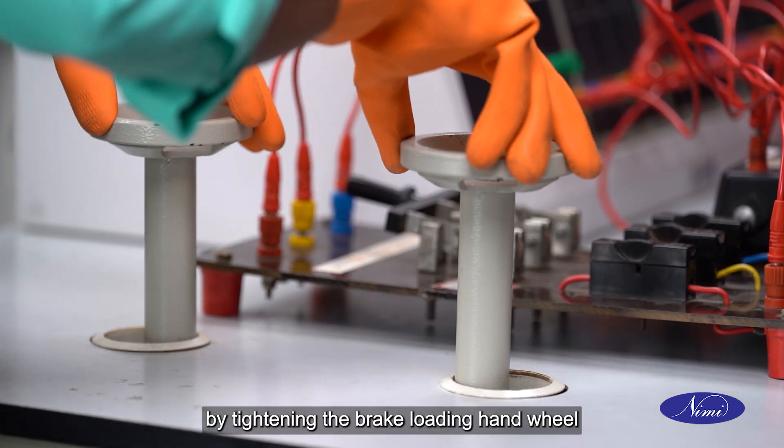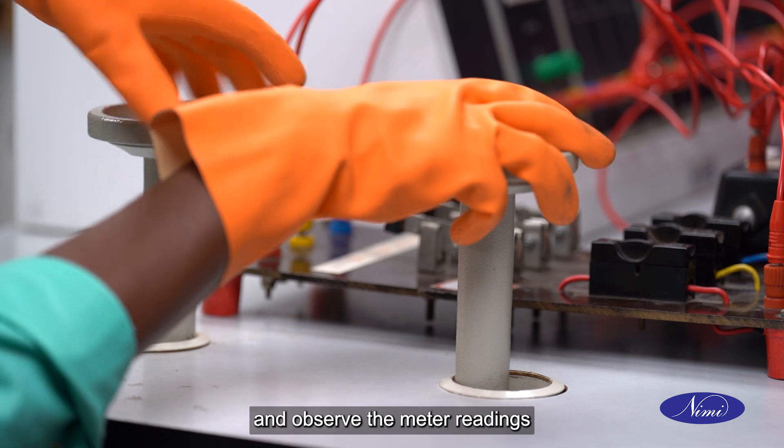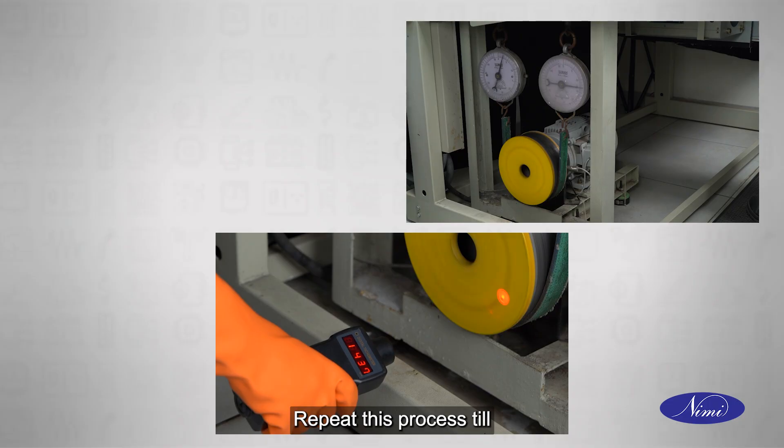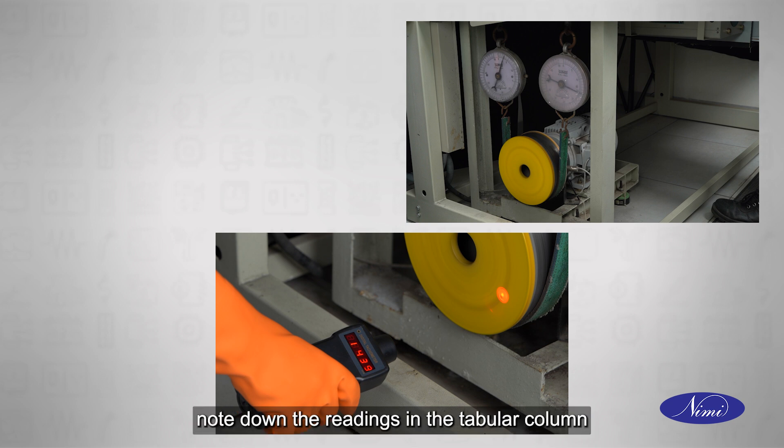Increase the load by tightening the brake loading hand wheel and observe the meter readings. Repeat this process till the ammeter reads its rated value and note down the readings in the tabular column.